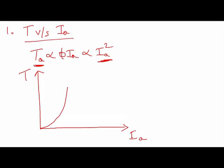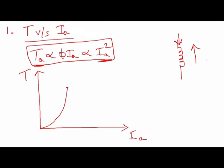However, as IA passes through the series field winding, there is a property of electromagnets called saturation. Once the current through the field winding increases beyond the saturation point, the flux produced remains constant even if current increases further. So the TA ∝ IA² relation holds only until saturation; after that the characteristic becomes linear — torque and current are directly proportional.